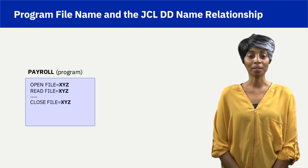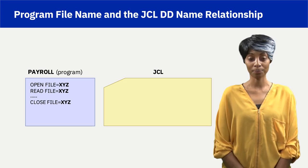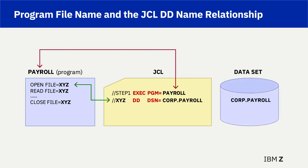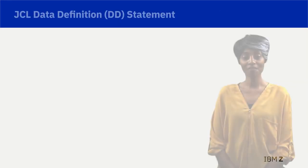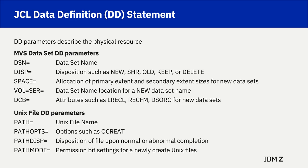JCL enables the ability for the same program to read a different ZOS physical resource without changing the program's source code. See how div1.payroll on the previous slide has been removed and now corp.payroll is specified. The vast majority of JCL statements are DD statements. Learning JCL is a matter of using existing JCL and making modifications. JCL is not difficult; it simply requires repetition and reviewing JCL output. Learning JCL is mandatory to be considered an experienced ZOS technician.